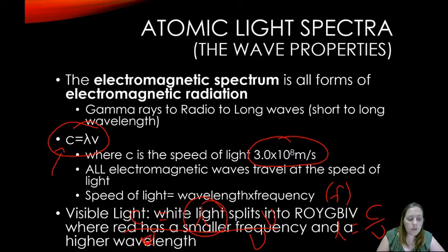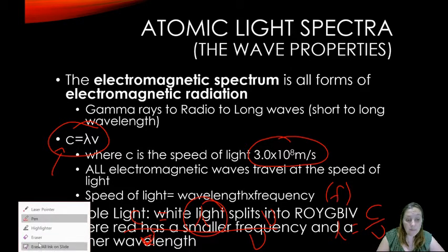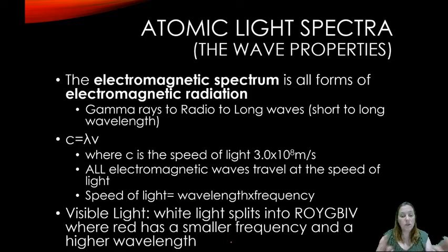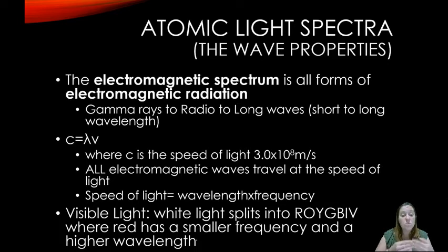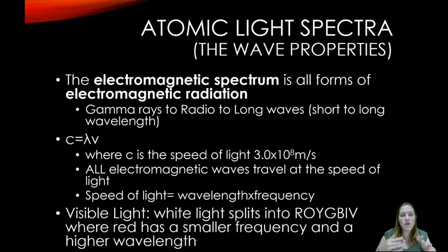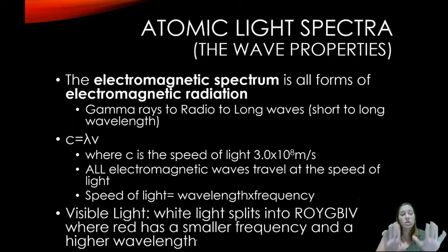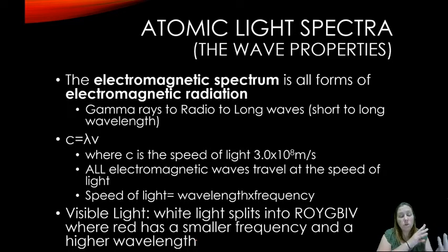Your visible light spectrum is what we can see. White light splits into red, orange, yellow, green, blue, indigo, violet. Red has a smaller frequency and a higher wavelength. This is important in the Doppler effect: as things come towards you, you have higher frequency; as things go away, you have lower frequency. You experience this when an ambulance passes your car and the frequency of the sound changes.